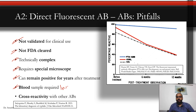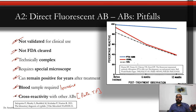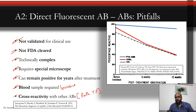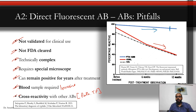Pitfalls of DFA-ABS: it has not been validated for routine clinical use and is not FDA cleared; it is technically complex and requires an immunofluorescence microscope; it can remain positive for years after treatment; it requires an invasive blood sample; and cross-reactivity with other pathogenic treponema can occur. On the graph, VDRL decreases steadily with treatment while DFA-ABS decreases very slowly — a significant disadvantage.